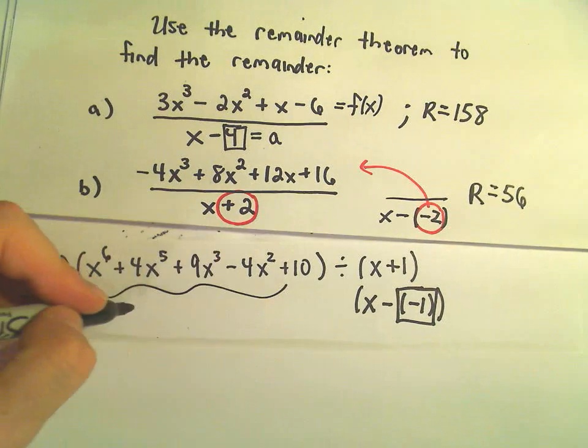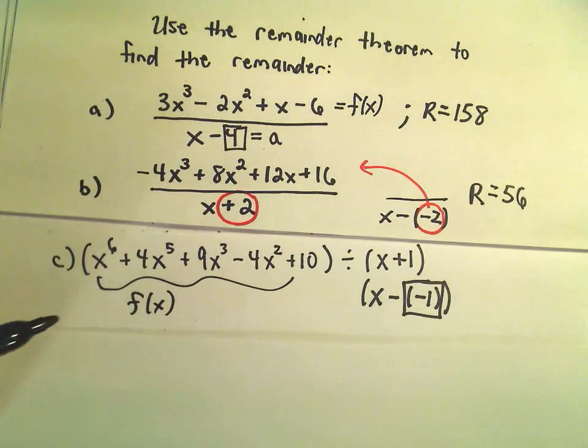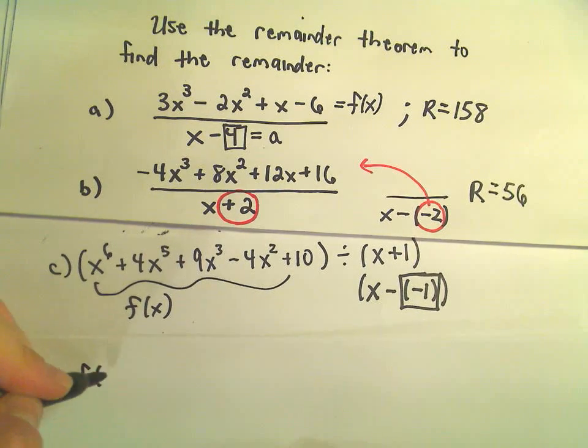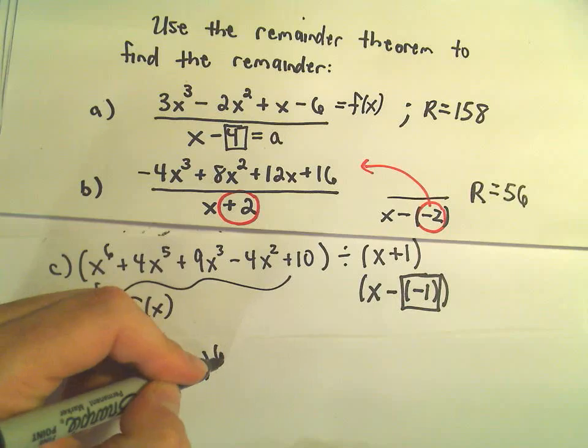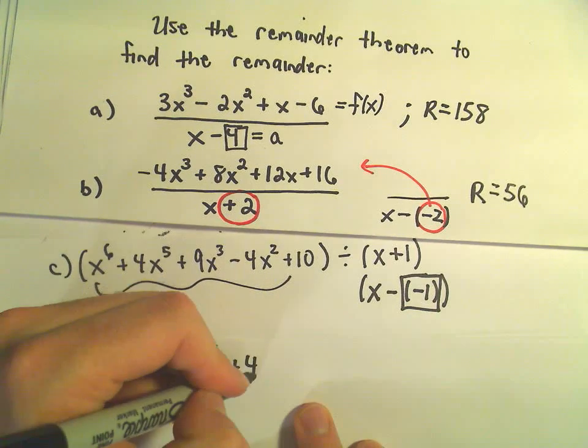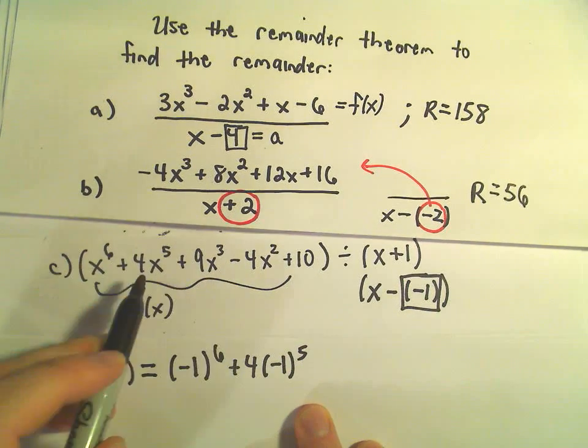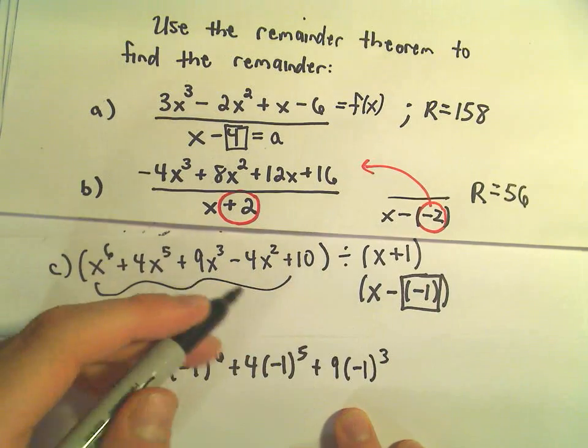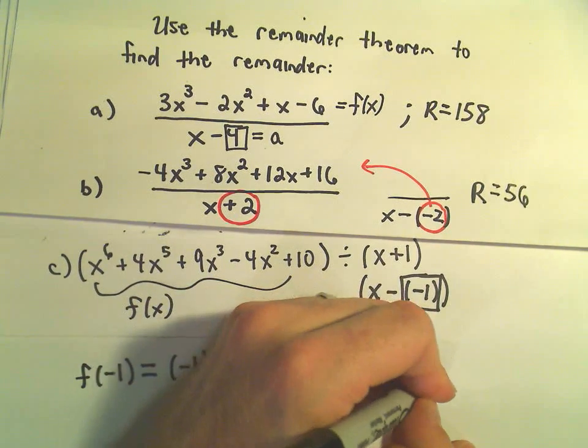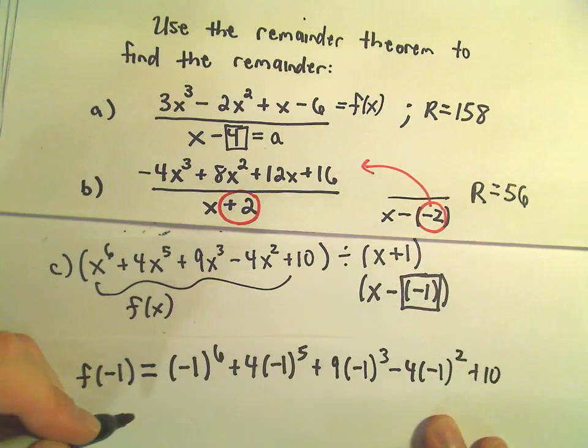We're simply plugging it into this function. This is my f(x). I'm not going to write it all out. But f(-1), we would get (-1)⁶ + 4(-1)⁵ + 9(-1)³ - 4(-1)² + 10.